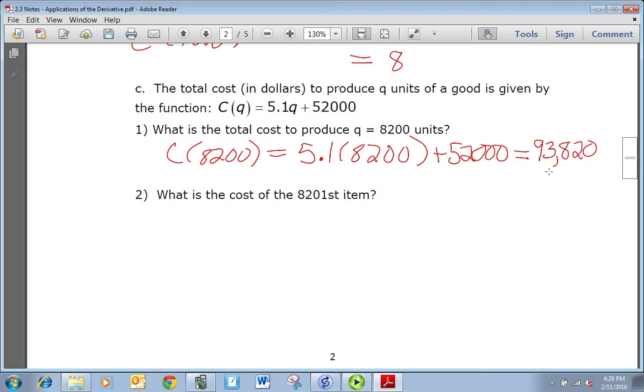What is the cost to produce the 8201st item? In other words, the next item - that means marginal cost. So to get marginal cost we need the derivative of the cost function, which is just 5.1. So it's a constant function, so no matter what we plug in, we're going to get 5.1.